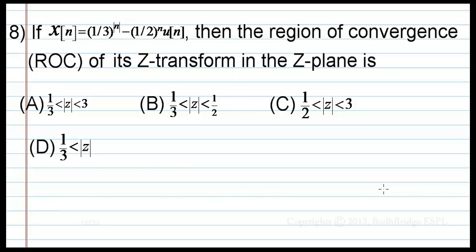If x(n) = (1/3)^|n| - (1/2)^n · u(n), then the region of convergence (ROC) of its Z-transform in the z-plane is: option A: 1/3 < |z| < 3, option B: 1/3 < |z| < 1/2, option C: 1/2 < |z| < 3, or option D: |z| > 1/3.